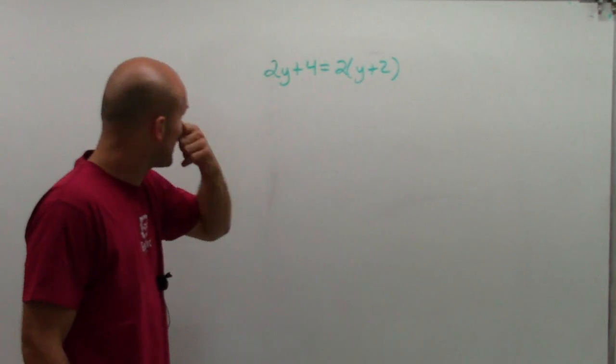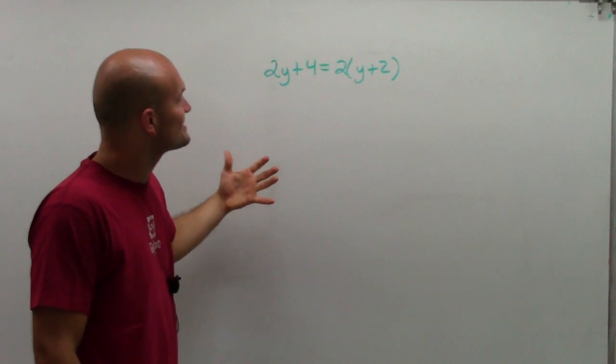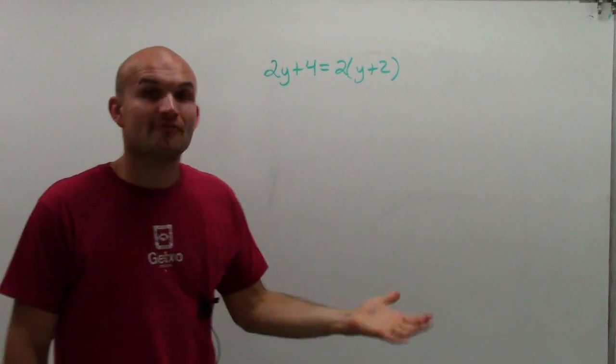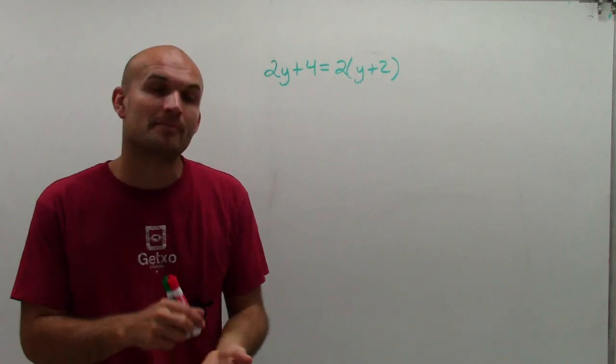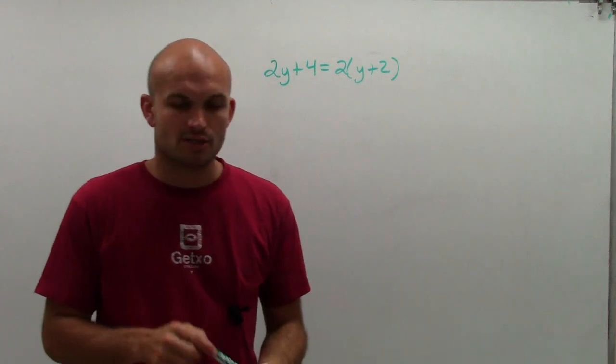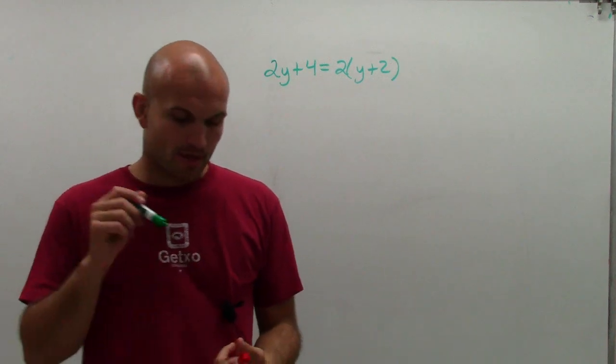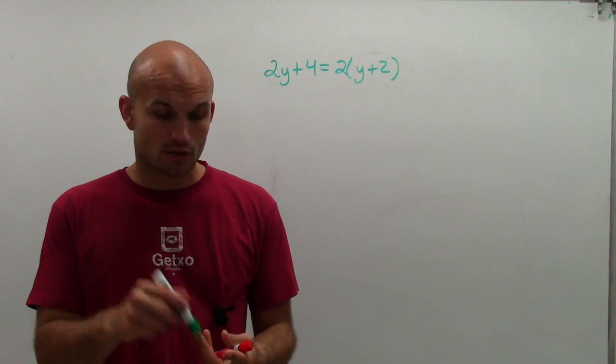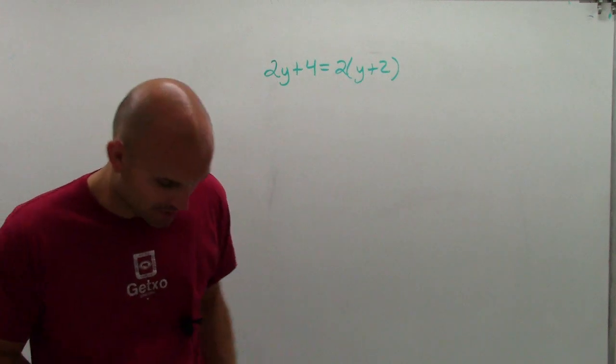So what we need to do for this problem is simplify this to get our variable on the same side. And then remember, there's going to be three options. We can either have infinitely many solutions, no solutions, or exactly one solution.